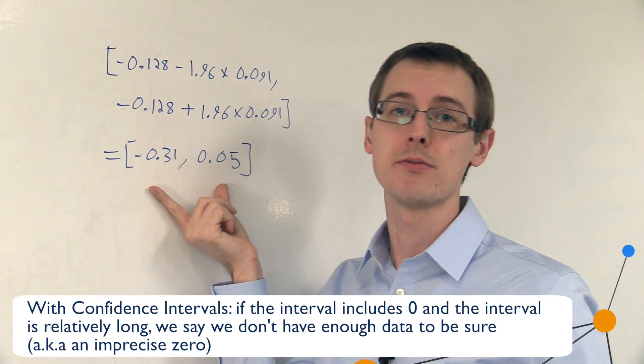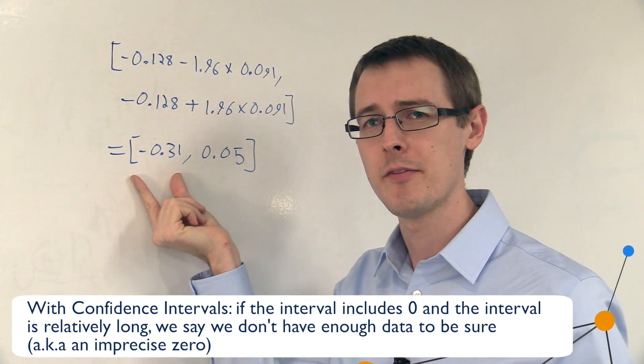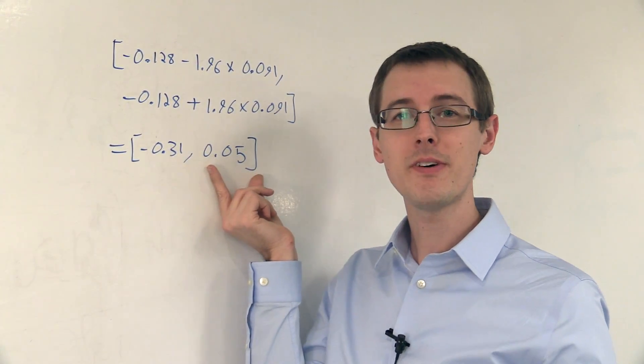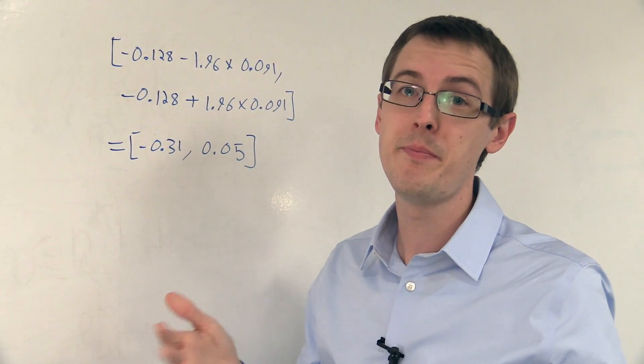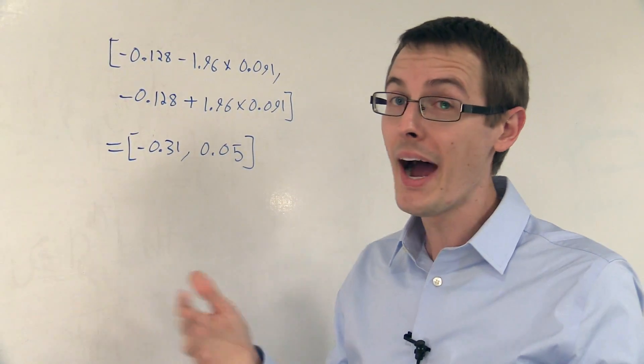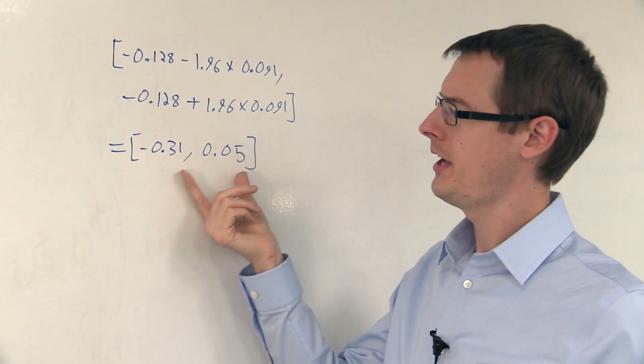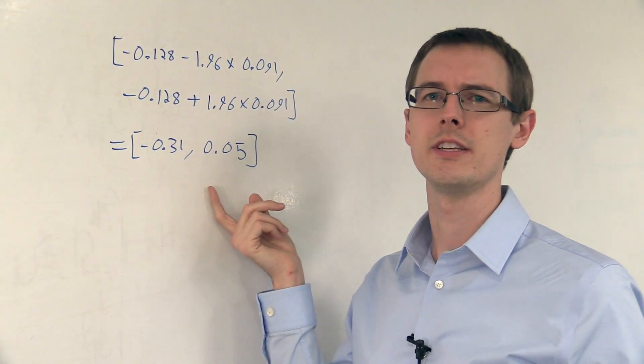Moreover, this is a very big interval. It goes from a very large negative number, minus 31%, which is a huge effect, up to positive 5%, which would also be a pretty big effect, a bad effect, that having property rights would increase teenage pregnancy.